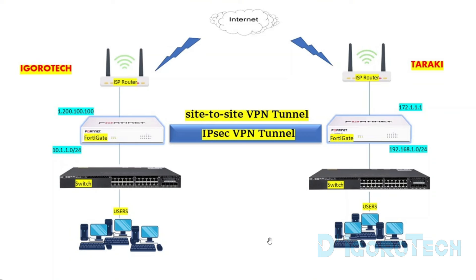Let's begin. This would be our network topology. We have two different networks or two different sites. The left is the Igorotek site network and the right is the Taraki site network. For us to allow communication between networks — for Igorotek users to access the Taraki network and also Taraki users to access the Igorotek network — we need to configure the IPsec VPN tunnel or site-to-site VPN. The Igorotek network has the public IP address of 1.200.100.100 with a LAN network of 10.1.1.0/24. The Taraki network has the public IP address of 172.1.1.1 with a LAN network of 192.168.1.0/24.